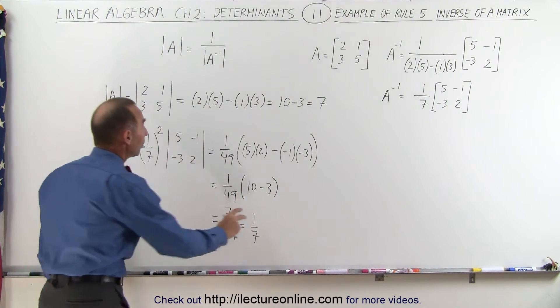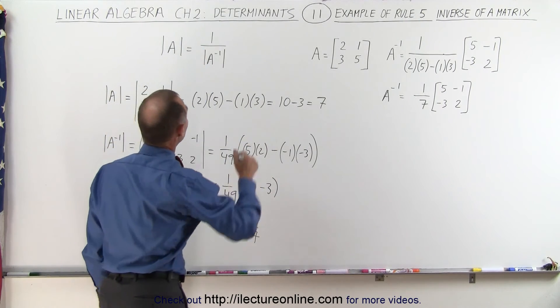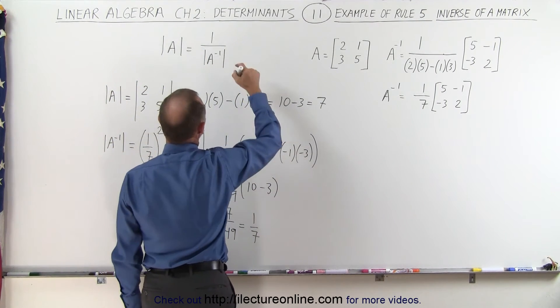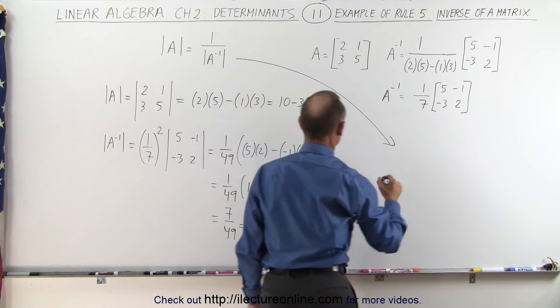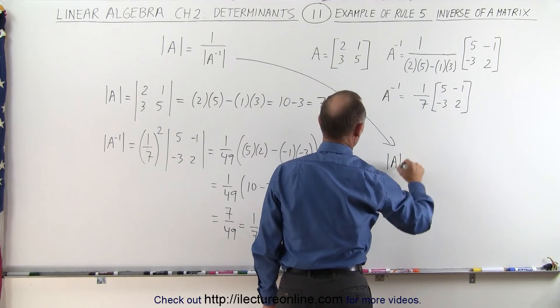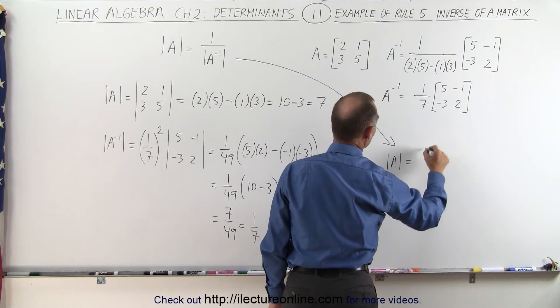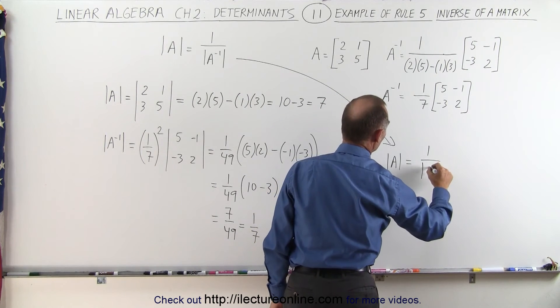Now let's go ahead and plug that into this equation right here so we can say that—well let's take this here and rewrite the equation over here. The determinant of matrix A should be 1 over the determinant of the inverse of matrix A.